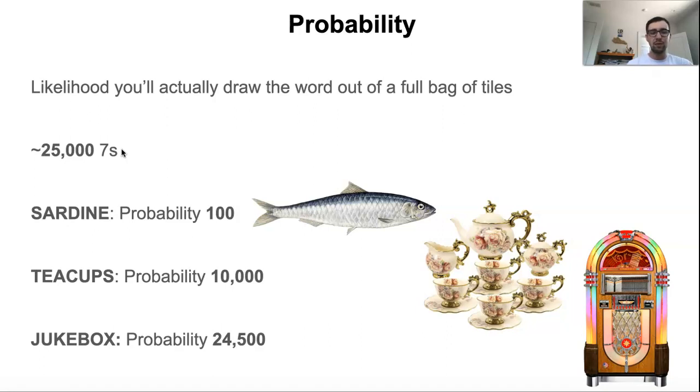Which as you can see down here is about probability 24,500. So there are only about 500 words, or seven letter words, that are less likely to come up than jukebox. And the reason jukebox is so unlikely to come up is because it has a J, a K and an X, all of which only occur once in the bag. So the odds that you're actually going to have all three of those tiles at the same time are extremely small.